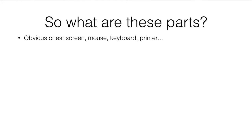So what are these parts that work together? There are some obvious ones that you already know: the screen, the mouse, the keyboard, the printer. You'll notice these are all external parts to a computer. These are all input and output parts that aren't really considered part of the computer — they're considered input and output devices.